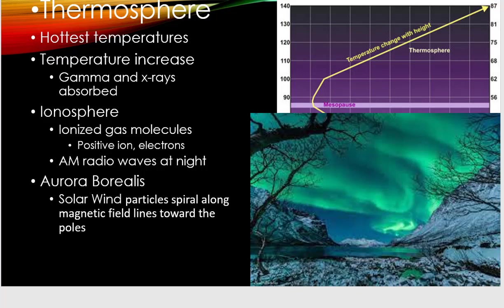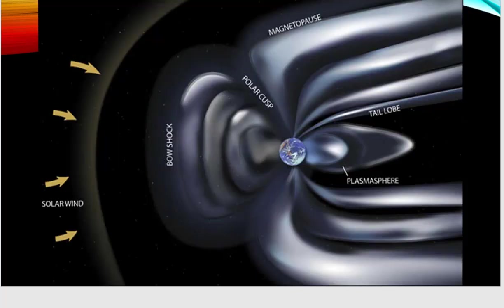The thermosphere has the hottest temperatures. There's a temperature increase because we're seeing more of that shortwave radiation — x-rays and gamma rays, which are even shorter wavelengths than ultraviolet light. Also in this region we have the ionosphere where gases are ionized. We especially see that in the polar regions, where the magnetic field is coming in and we see the aurora borealis. Solar wind particles spiral along magnetic field lines toward Earth, and those Van Allen belts deflect charged particles from the sun. They'll come in at either the North Pole or South Pole, wherever the magnetic lines of force are reentering Earth, giving us protection from the solar wind.